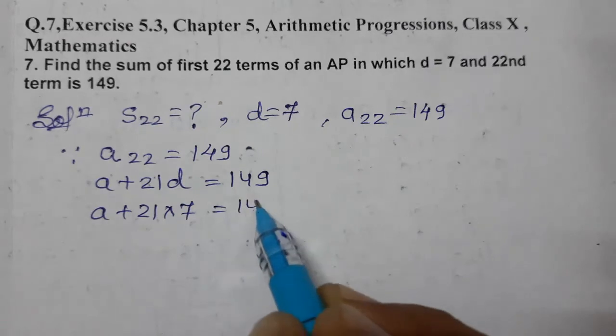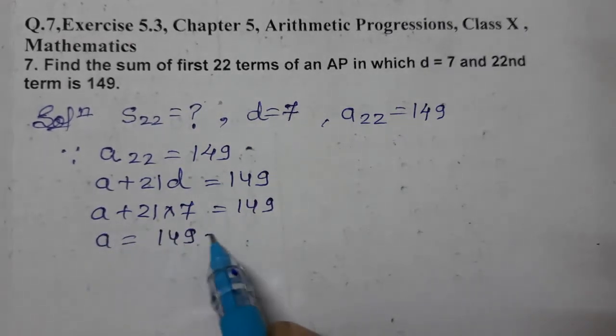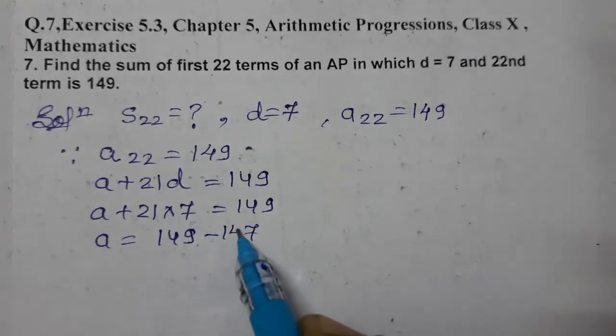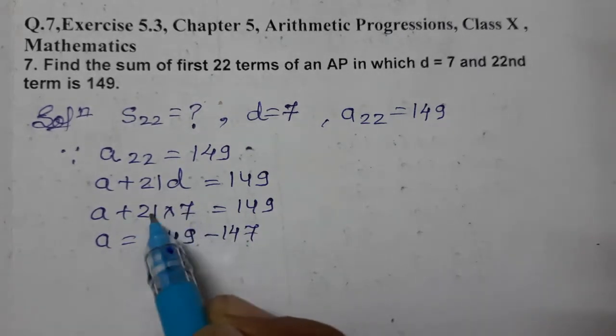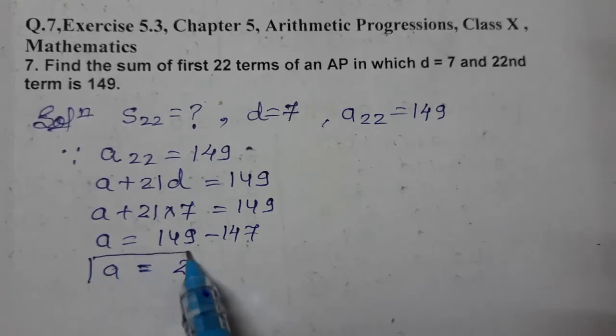So a = 149 - 147 = 2. After subtracting 21 times 7, which is 147, we get a = 2. Now we need to find S₂₂.